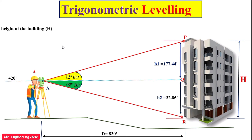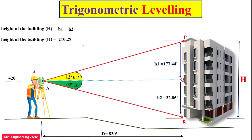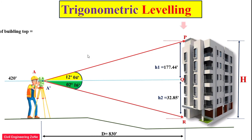For the required data, the total height of the building capital H equals h1 plus h2. In this case, the total height of the building is 210.29 feet. The second part of the required data is the reduced level of the top of the building.